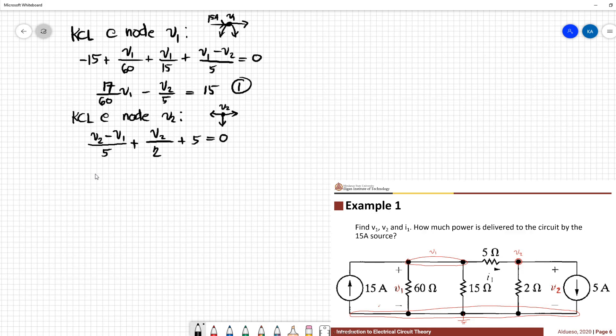So again combining like terms we have negative V1 over 5 plus 7 over 10 V2 equal to negative 5.